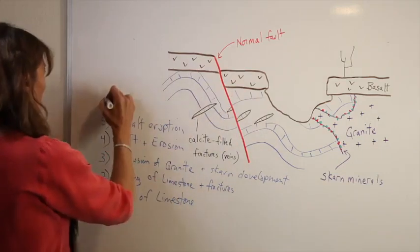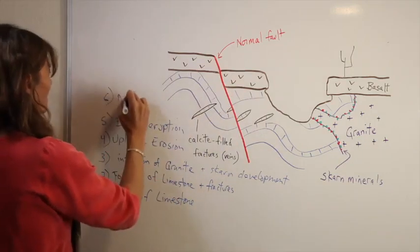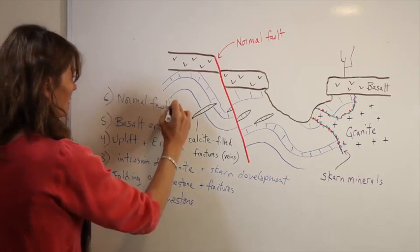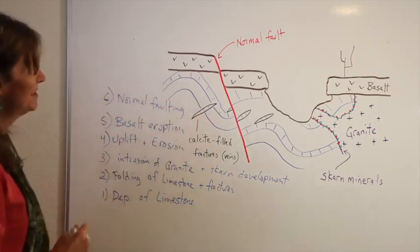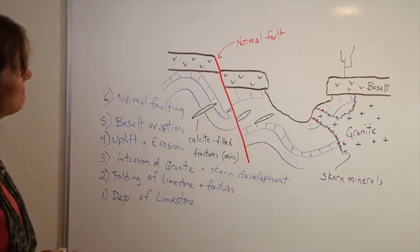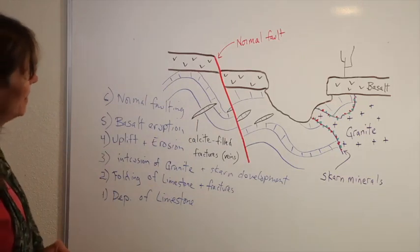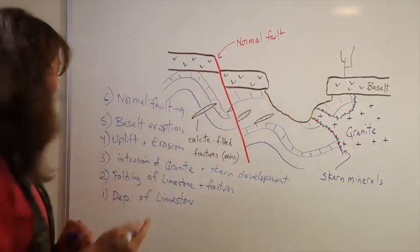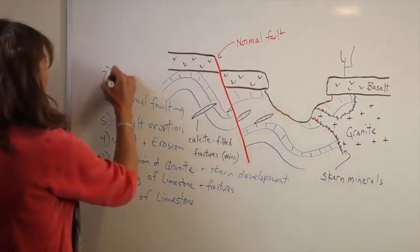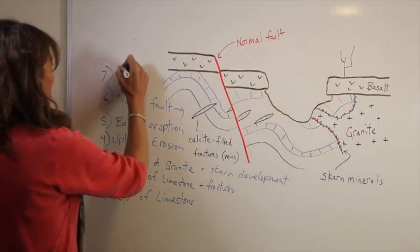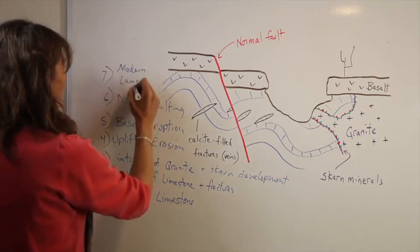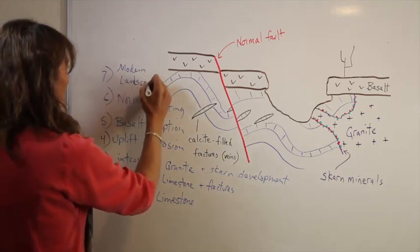And then we've got our normal fault, which would be crustal extension. And, well, you know, any landscape development, growth of the cactus, all that kind of stuff. Modern landscape. Scape. Okay.